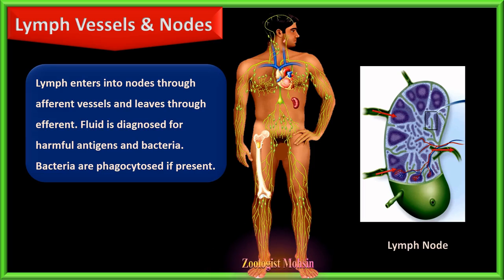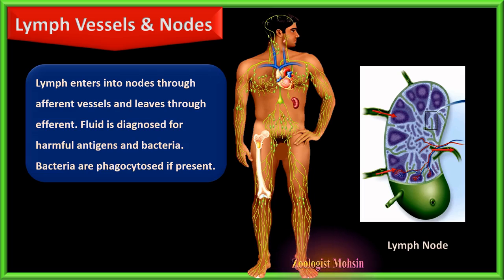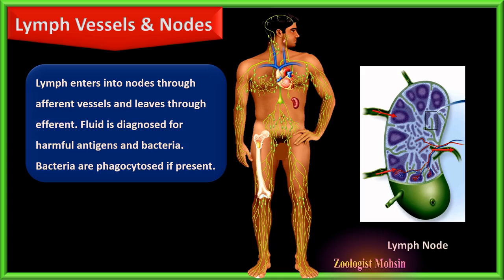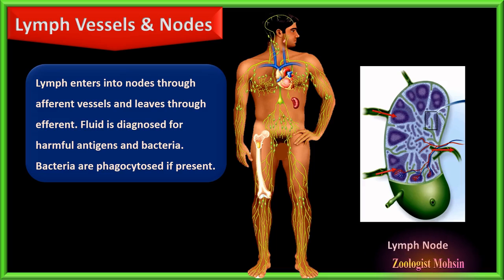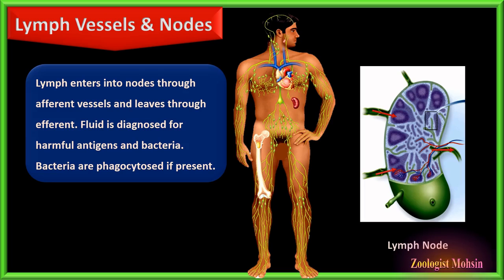Lymph nodes are box-like structures enriched with a variety of cells that have specific functions, and many phagocytes float randomly to detect any harmful antigen or bacteria. Lymph enters through several afferent ducts and leaves through fewer efferent ducts, ensuring it stays inside the node for a while. Such nodes are present throughout the body, and each part of the body operates independently.